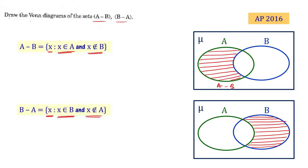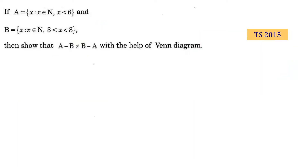Now let's represent B minus A. B minus A is the set of elements x such that x belongs to B and does not belong to A. Only the portion exclusive to B is shaded. So A minus B and B minus A have different shaded portions, which means A minus B is not equal to B minus A.